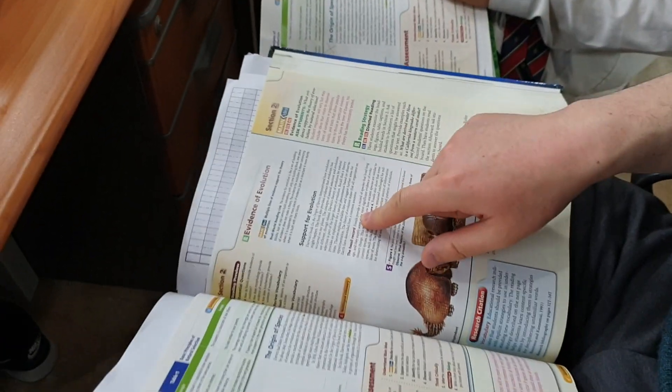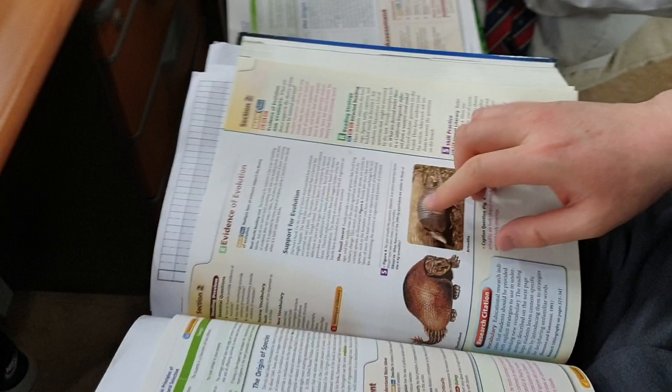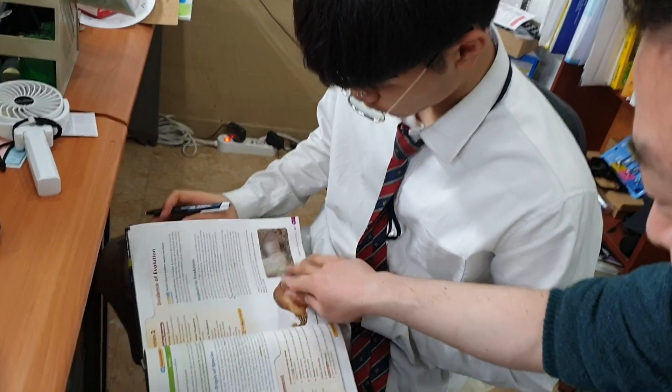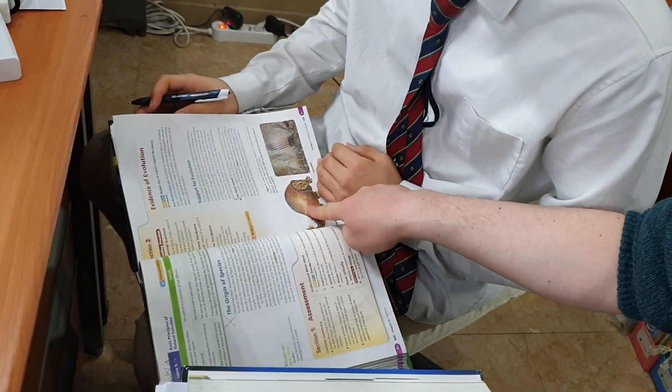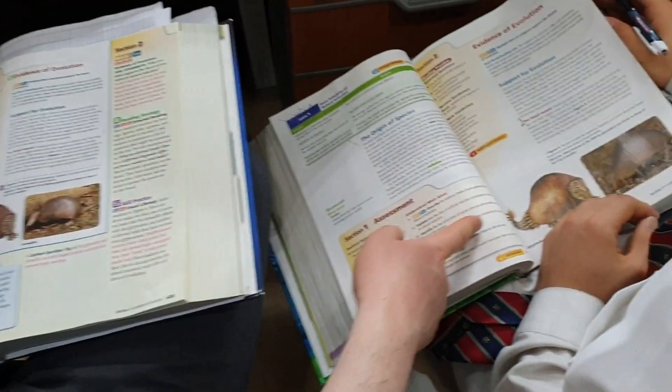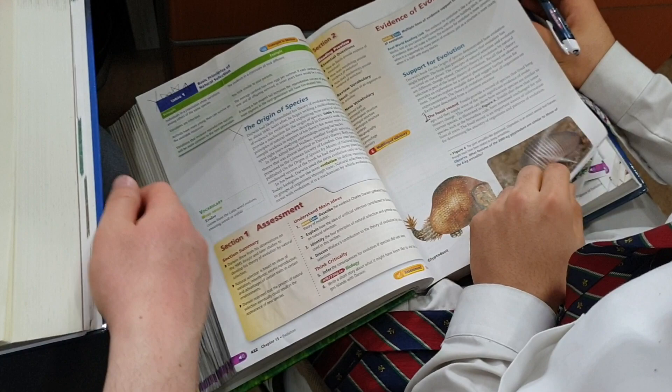The fossil record supports this theory. You'll notice that this current animal is very similar to this ancestor, this ancient animal, suggesting that they had a common ancestor since the appearance is the same.